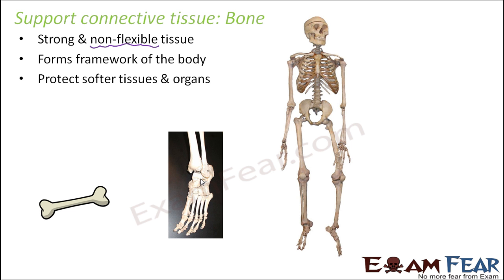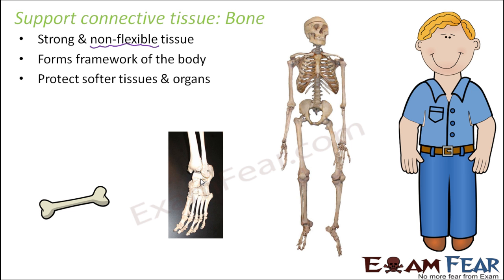Multiple bones are joined together in a specific fashion to form the skeleton. Over this skeleton our body is formed — it is the basic framework. Not only bones, you need something to join the bones as well. Bone is hard, non-flexible, and forms the framework of the body. Many bones join together to form each part, then all these parts get connected, the skeleton is formed, and over that everything else is added.